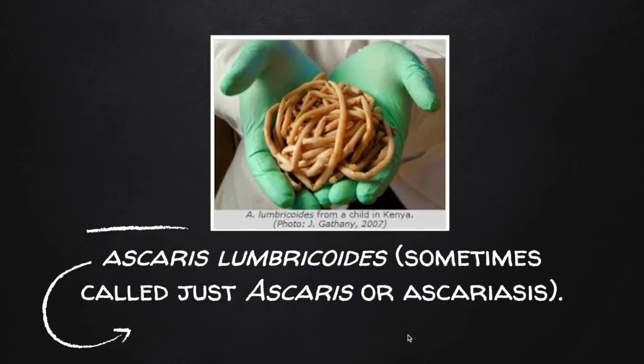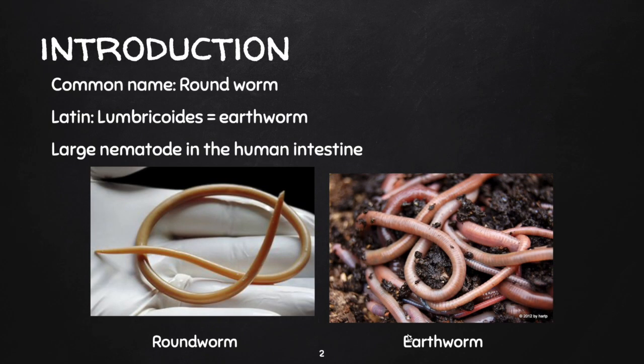For today's lesson, I am going to talk about Ascaris lumbricoides, or sometimes just called Ascaris or Ascariasis. Ascariasis is an infection of the small intestine caused by Ascaris lumbricoides. Roundworm is the common name of this species in the phylum Nematoda. The word 'lumbricoides' is Latin for earthworm. It is a large nematode found in the human intestine.